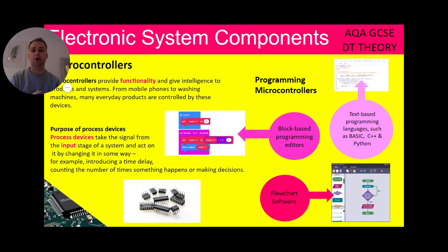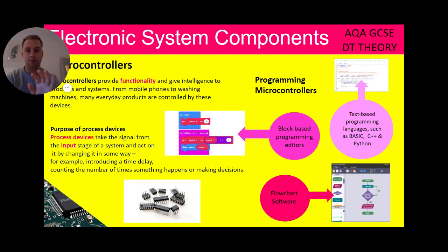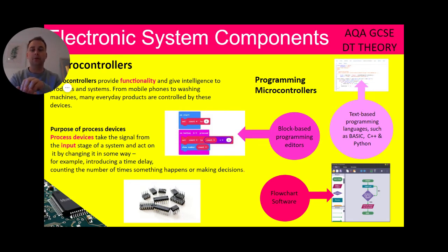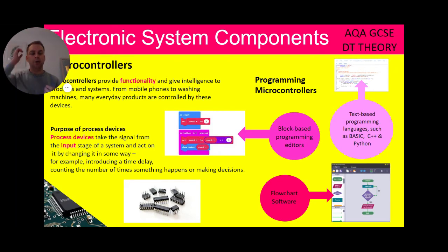One topic that will come up very, very commonly is microcontrollers. Microcontrollers provide functionality and give intelligence to models or systems — from mobile phones to washing machines, many everyday objects are controlled by these devices. The purpose of microcontrollers is to take the signal from the input stage of a system and act on it. So it takes that motion of walking past our motion sensor in our house and acts on it by changing it in some way — for example, introducing a time delay, counting the number of times something happens, or making decisions. Think of it a little like the driver — it's a disruptor, the second brain of the electronic system in our input, process and output.